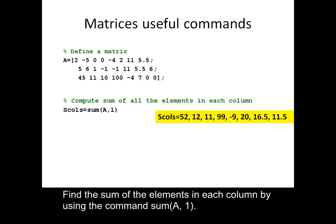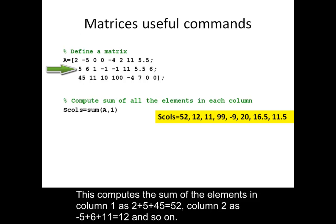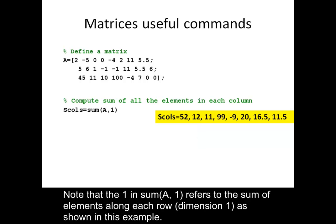Find the sum of the elements in each column by using the command sum(A,1). This computes the sum of the elements in column 1 as 2 plus 5 plus 45 equals 52, column 2 as minus 5 plus 6 plus 11 equals 12, and so on. Note that the 1 in sum(A,1) refers to the sum of elements along each row dimension 1, as shown in this example.